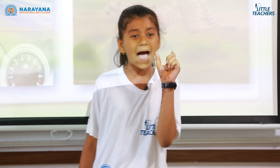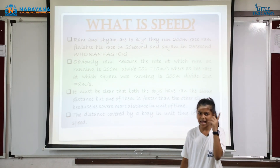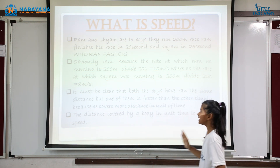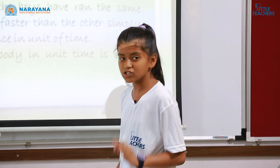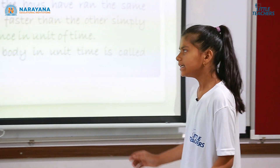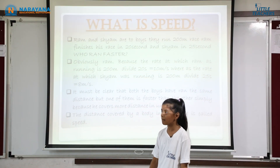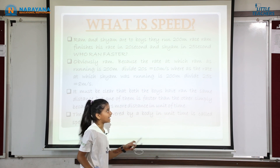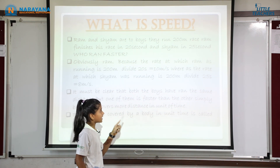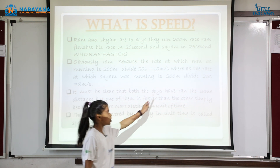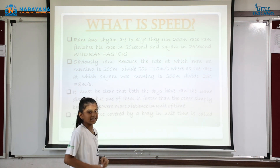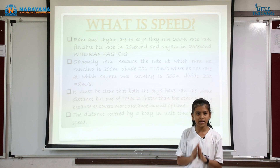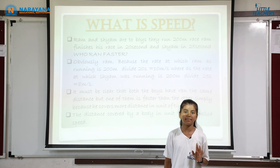Now let us learn what we actually mean by speed. Imagine that Ram and Shyam are two boys who ran a 200 meter race. Ram finishes in 20 seconds and Shyam in 25 seconds. Then who ran fast? Obviously Ram, because the rate at which Ram was running was 200 meters divided by 20 seconds, that is equal to 10 meters per second, whereas Shyam's rate was 200 meters divided by 25 seconds, equal to 8 meters per second. So both boys ran the same distance but one of them is faster.